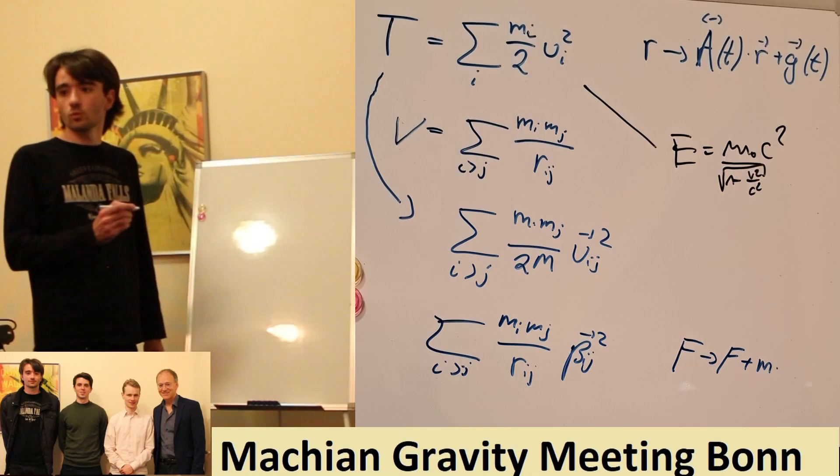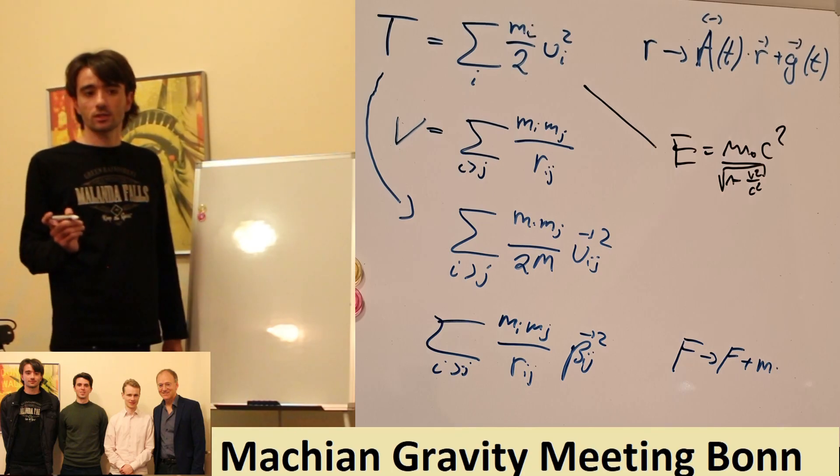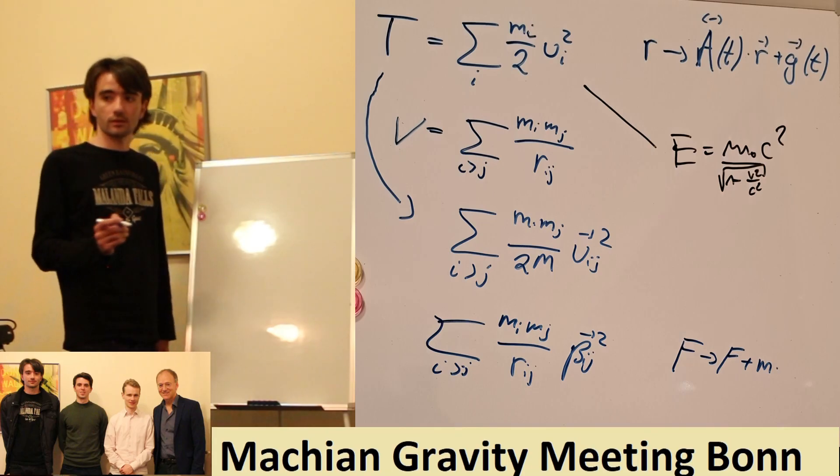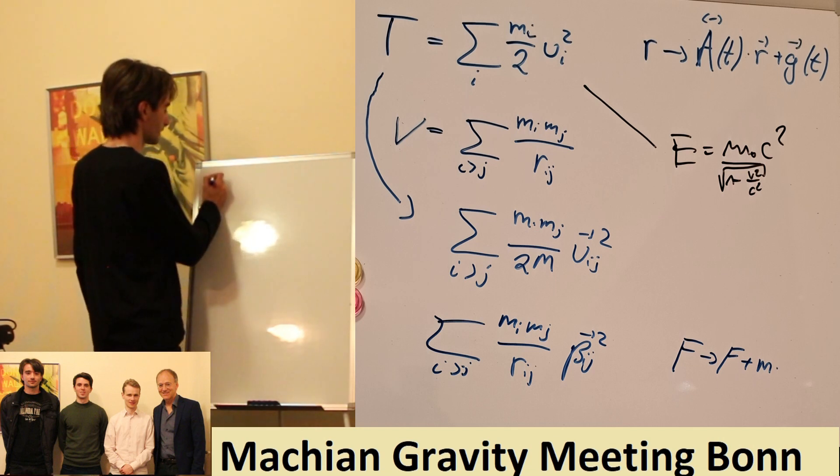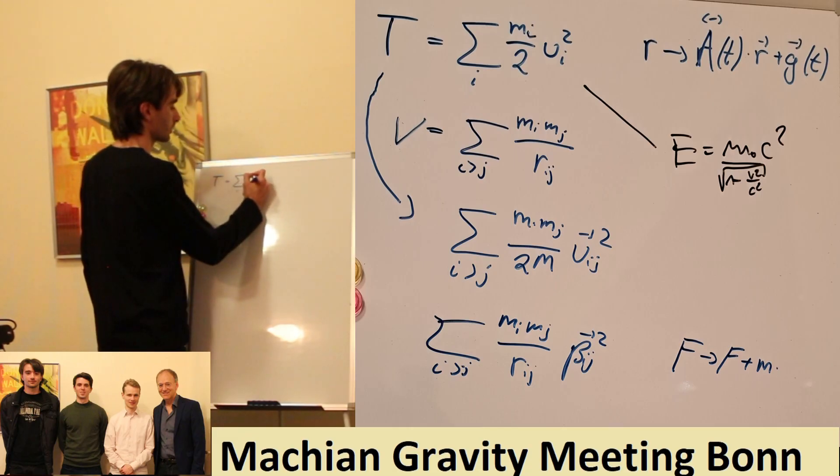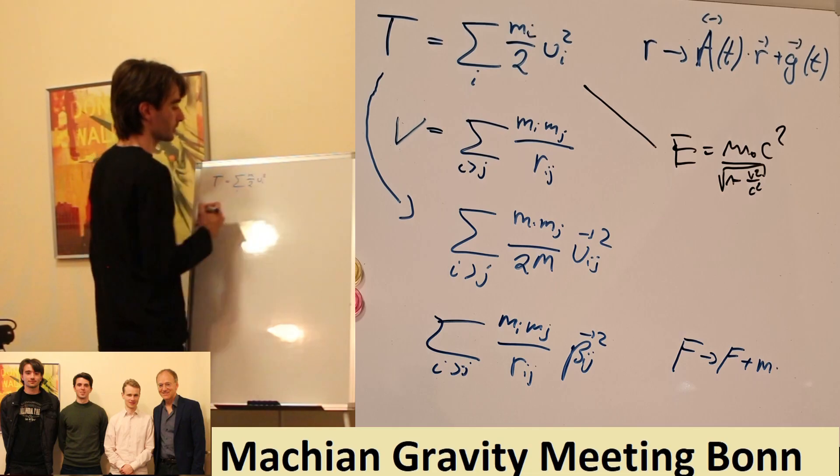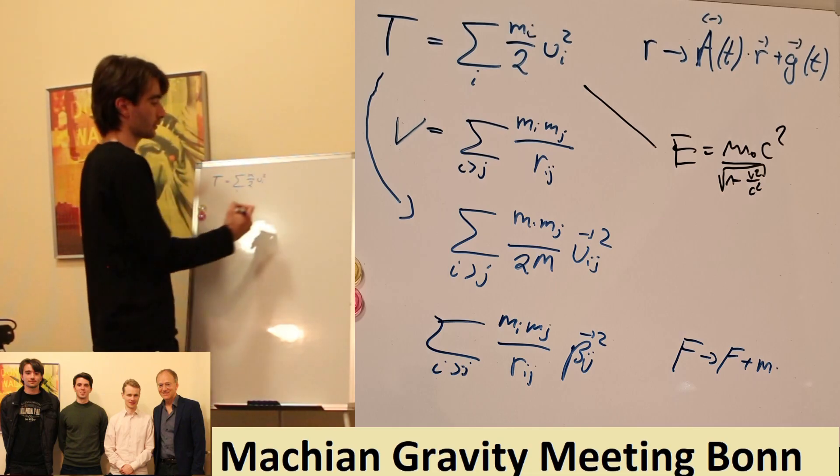Yes, I mean it has to do with the transformations that we just wrote down and it is not invariant. So the kinetic energy in common Newtonian physics is just something like m_i half times v squared.